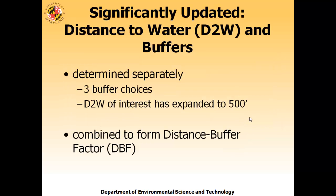Another significantly updated element is the distance to water—I'll call that D2W—as well as buffers. They were commingled before in PSI and were one of the parts people had the hardest time understanding. They are now separately and very clearly determined. There are three buffer choices, and the distance to water of interest for this tool has been expanded from 100 feet to 500 feet. After determining them separately, you combine them to get something called the DVF, or distance to buffer factor.